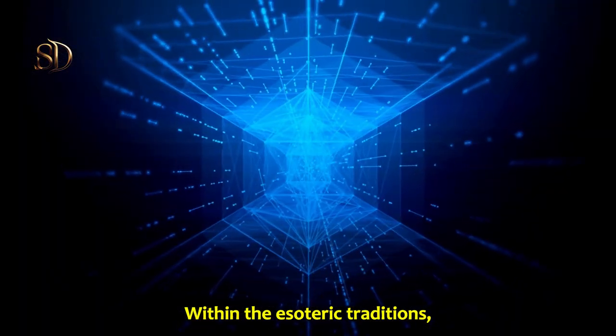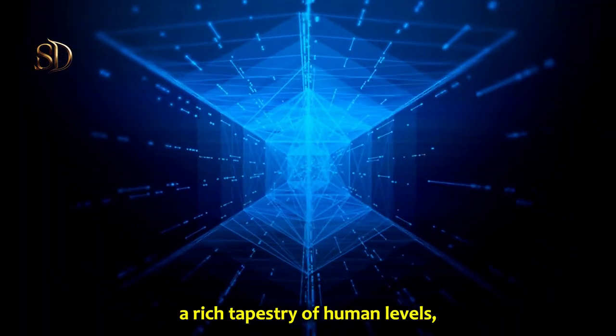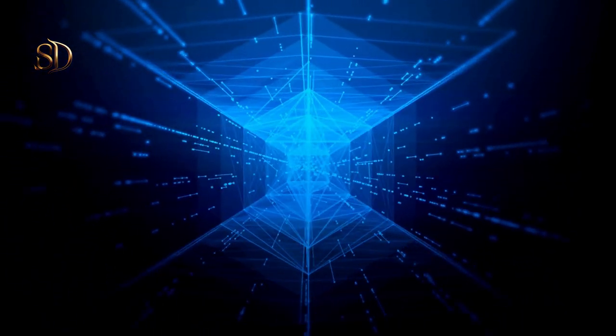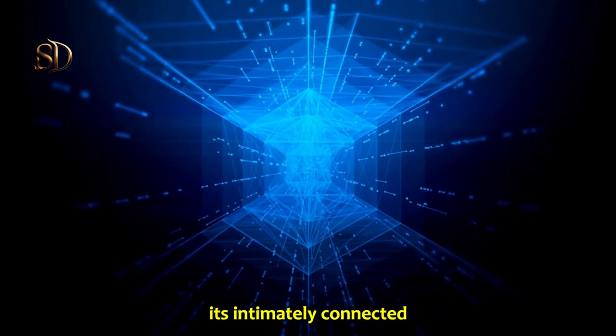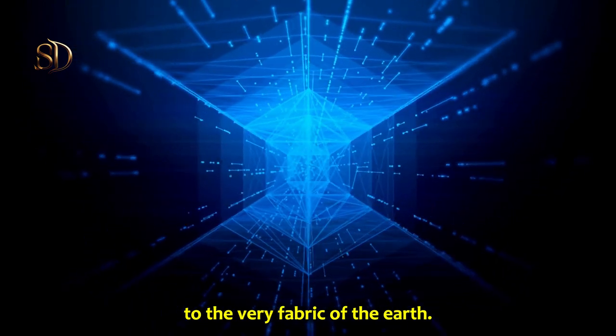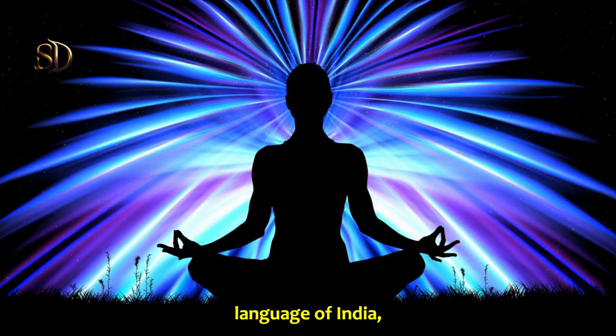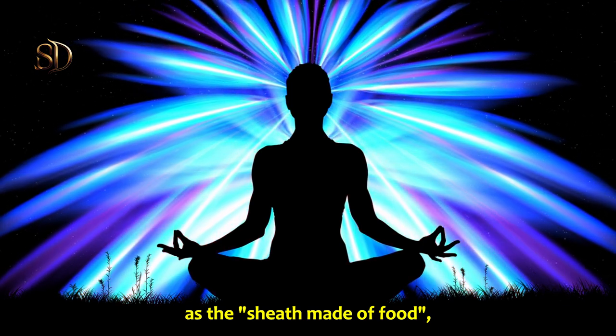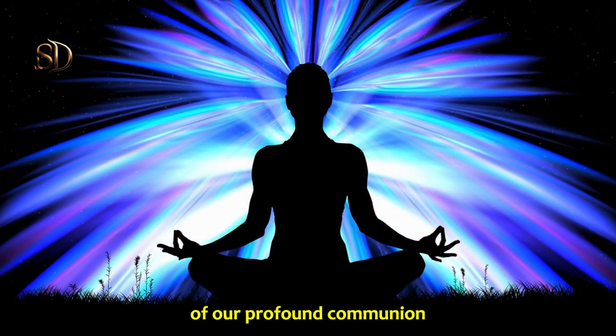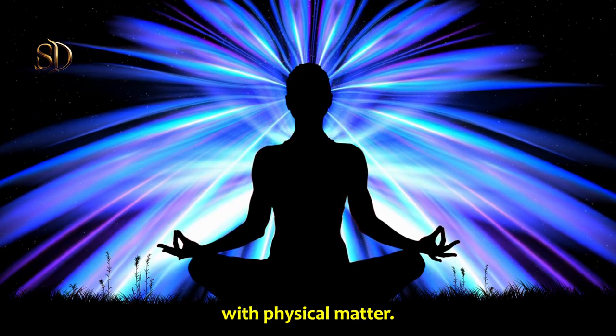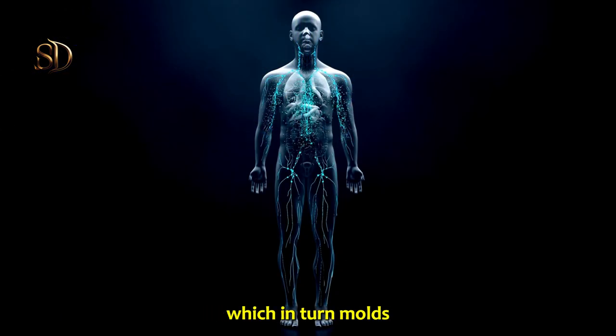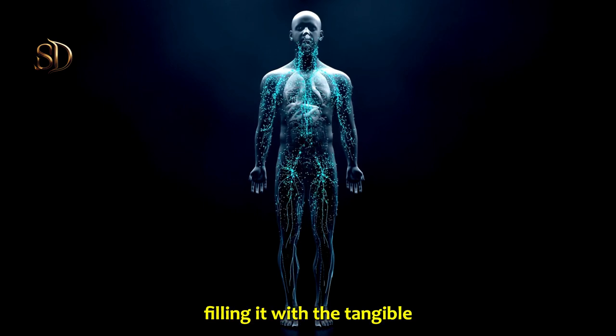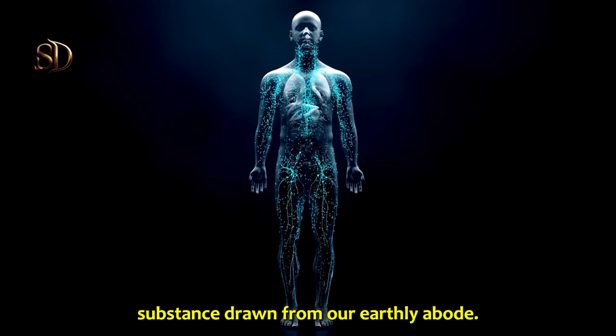Within the esoteric traditions, we encounter a rich tapestry of human levels, each distinct in its essence. The physical body is intimately connected to the very fabric of the earth. In the ancient Sanskrit language of India, it is aptly referred to as the sheath made of food, a poetic reflection of our profound communion with physical matter. We consume sustenance, which in turn molds the energetic outline of our corporeal form, filling it with the tangible substance drawn from our earthly abode.